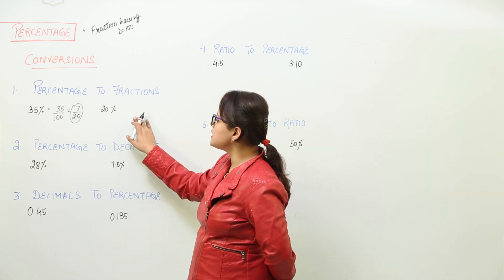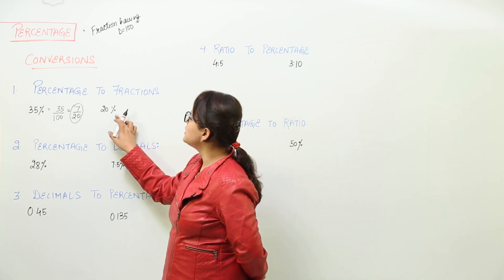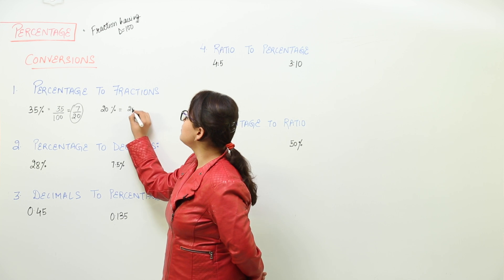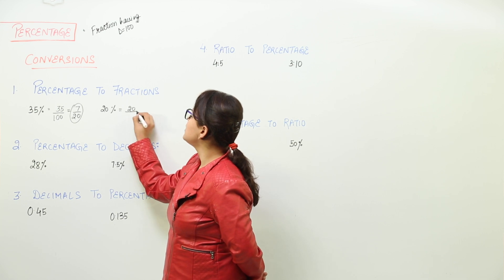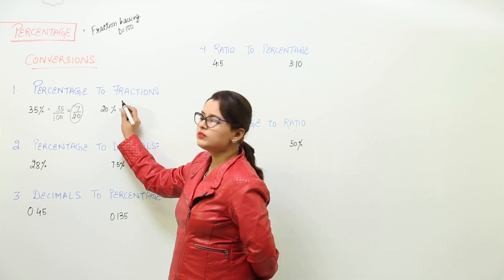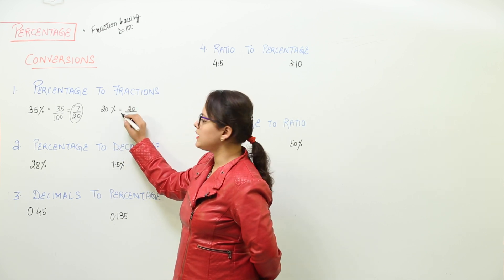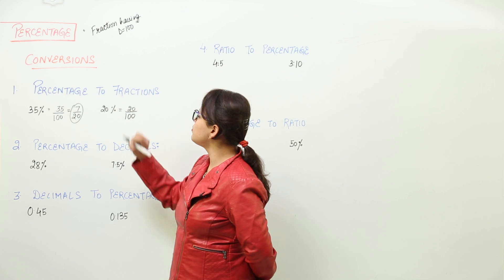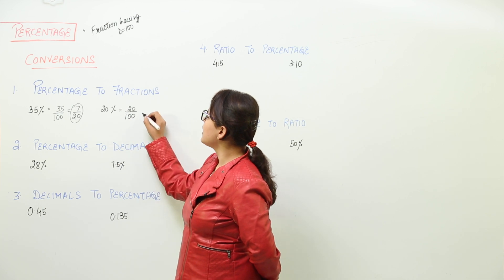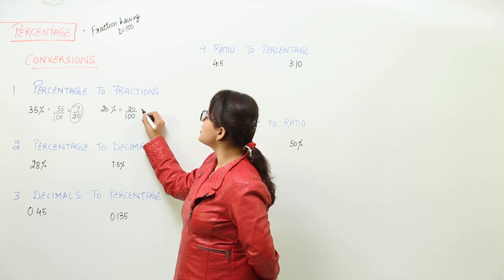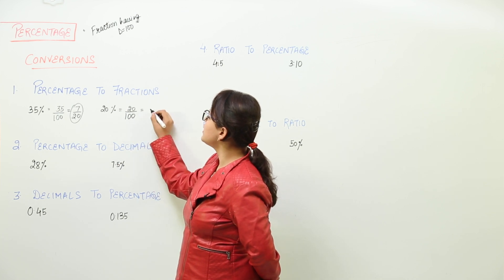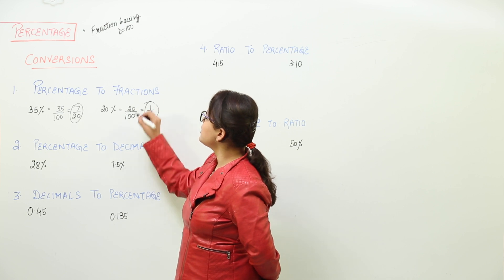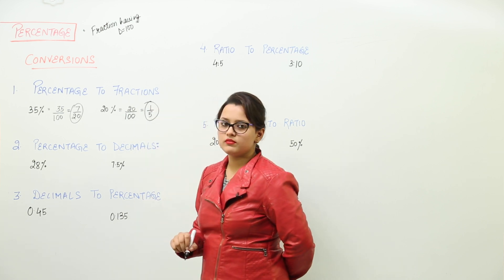The second one is converting 20% into fractions. Again we will write 20 over 100 to remove the percentage sign, and we can check if it simplifies further. Yes, we get it as 1 by 5.